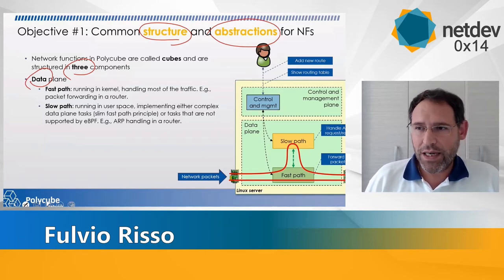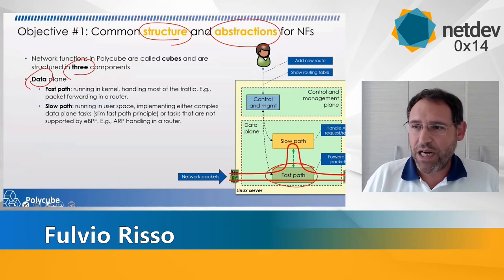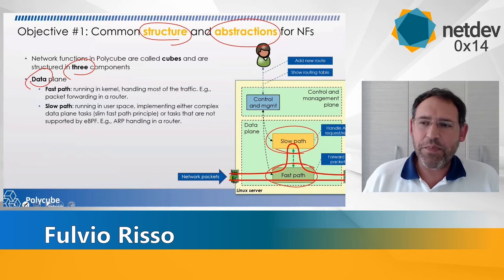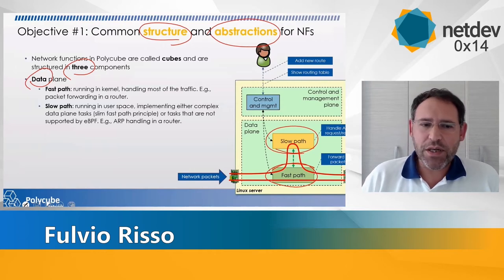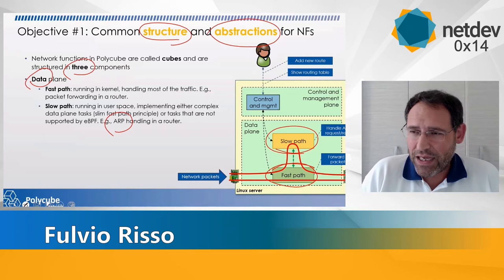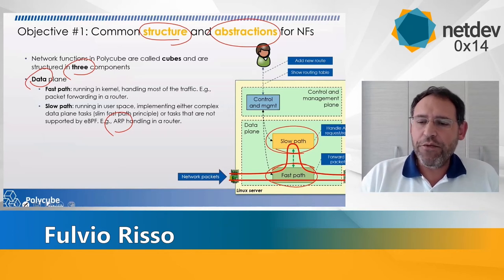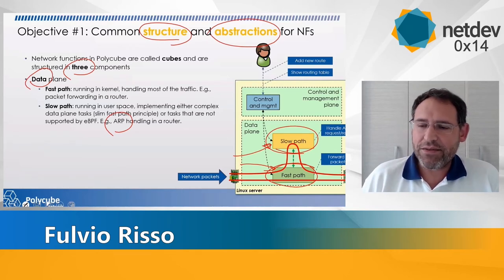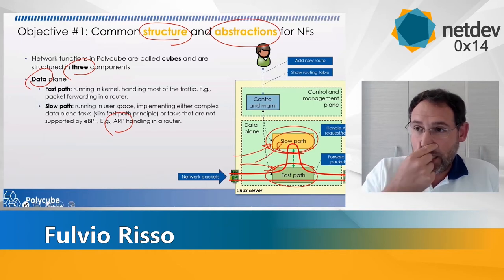First, the fast path, which handles most of the packets — packets come in, the fast path does something and sends them out, like forwarding in a router. Then there is usually a slow path component, which handles tasks that are still data path but don't happen often. For instance, handling ARP requests — this is something a router needs to do, but it doesn't happen so often. If we move that logic to the slow path, we can create a much slimmer, faster fast path, while still having the possibility to handle that traffic in the slow path when truly needed.